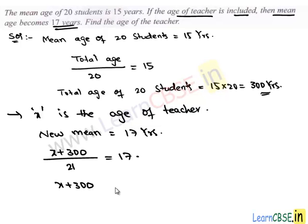Then by simplifying, we get x plus 300 is 17 times 21, which is equal to 357.